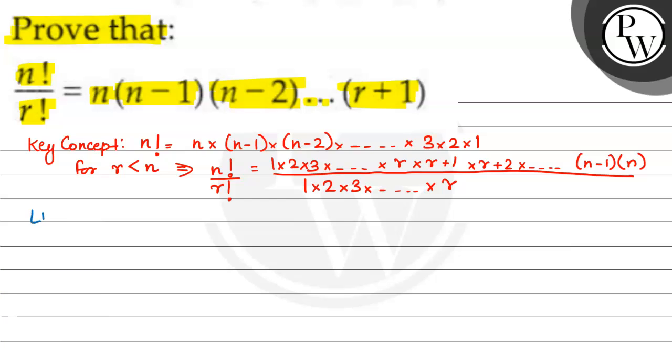तो, मैं consider करता हूं बच्चों. N factorial upon R factorial कैसे मैं आपको बता है ऐसे लिखने है. 1 multiplied by 2 multiplied by 3 so on up to R multiplied by R plus 1 multiplied by R plus 2 so on up to N minus 1 multiplied by N.